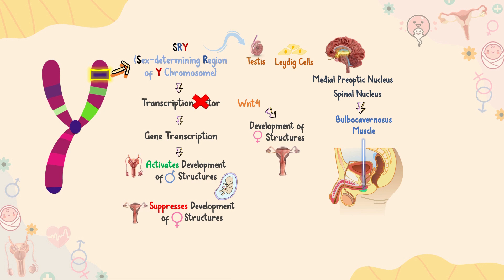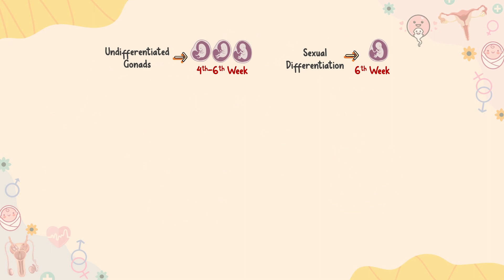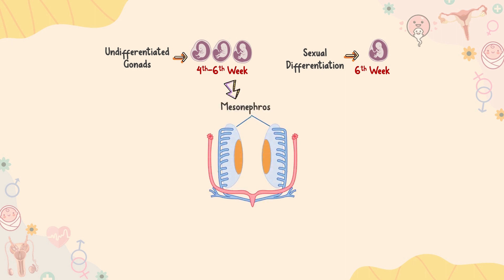Sexual differentiation starts after the sixth week of gestation. However, undifferentiated gonads are apparent after about four to six weeks of gestation. During this period, both the Mullerian ducts and the Wolffian ducts are present.